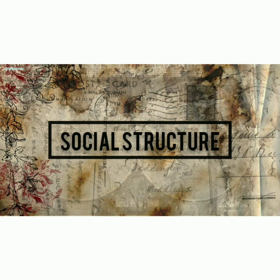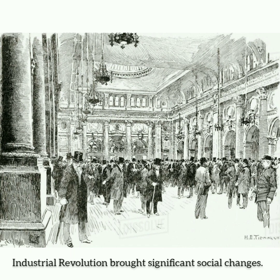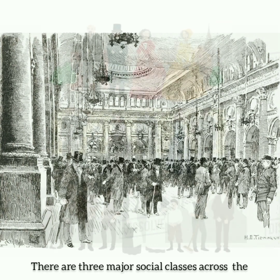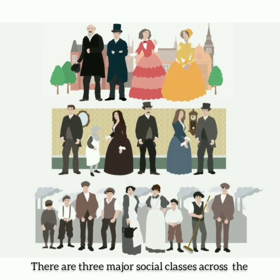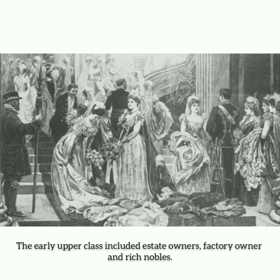Social Structure: The industrial and economic development of the industrial revolution brought significant social change. There are three major social classes across the industrial revolution using a social table for England. First, the upper class. The early upper class included estate owners, factory owners, and rich nobles.